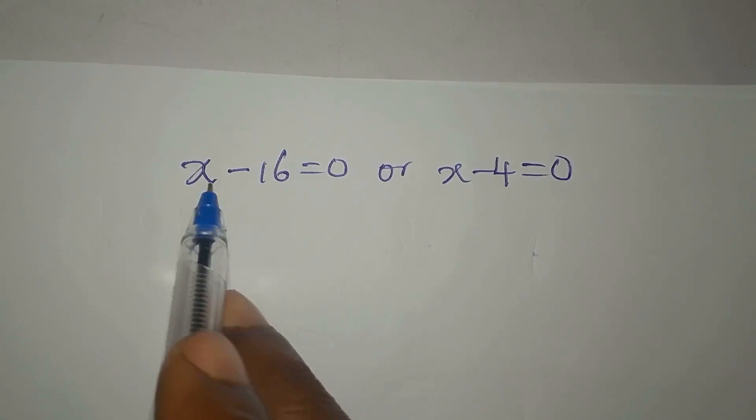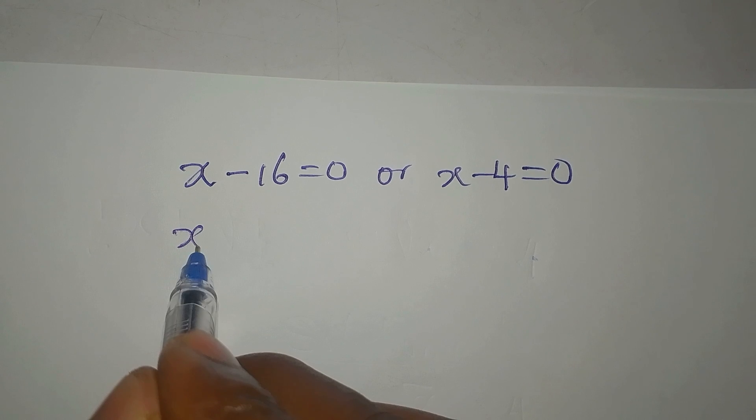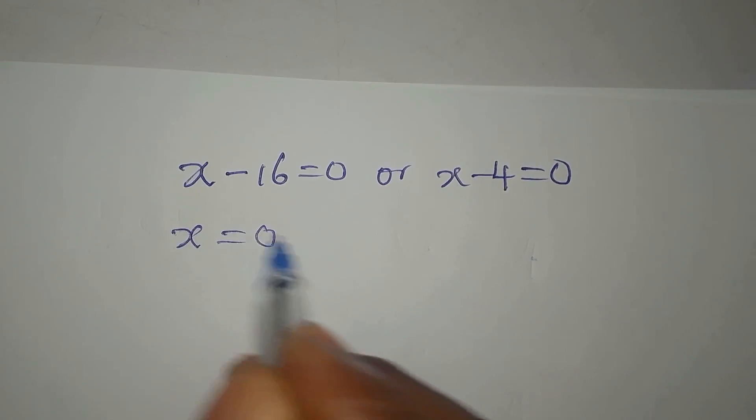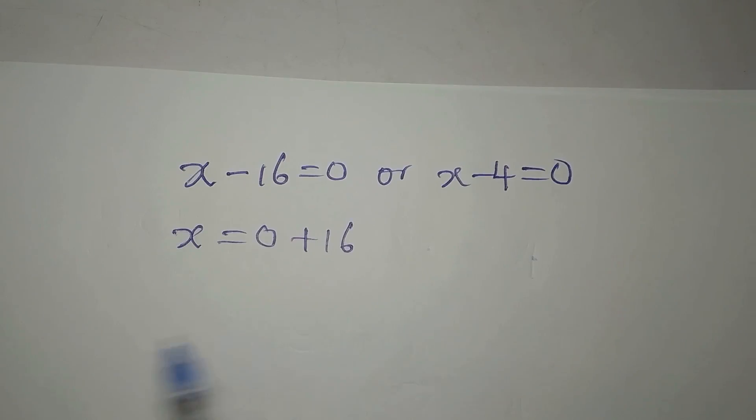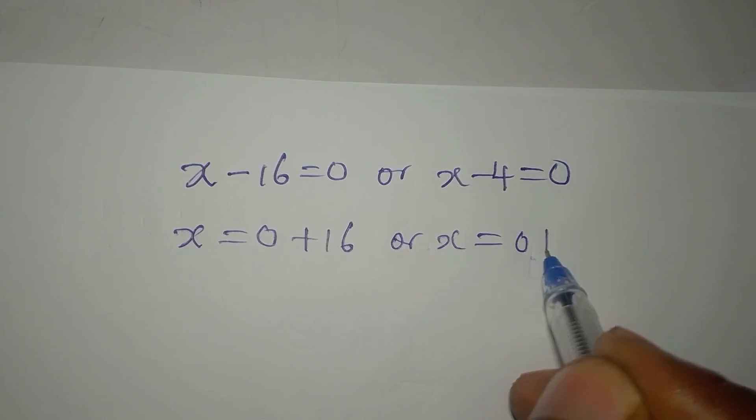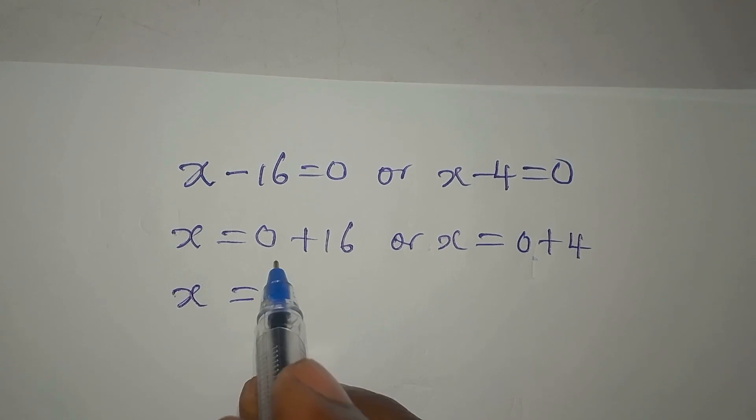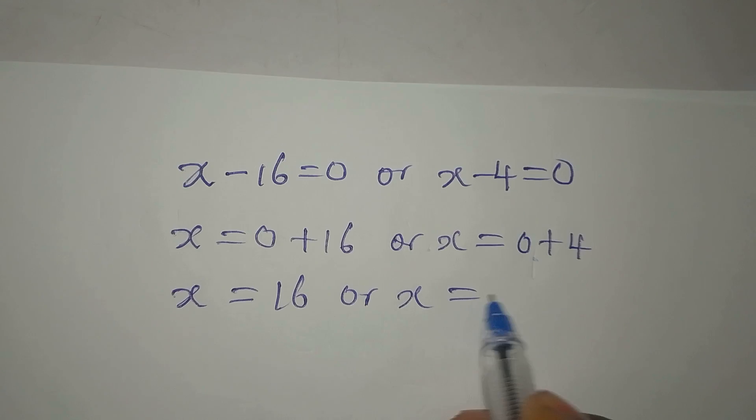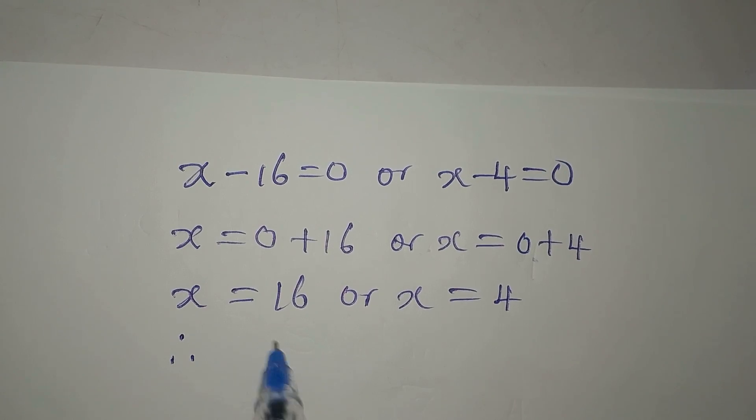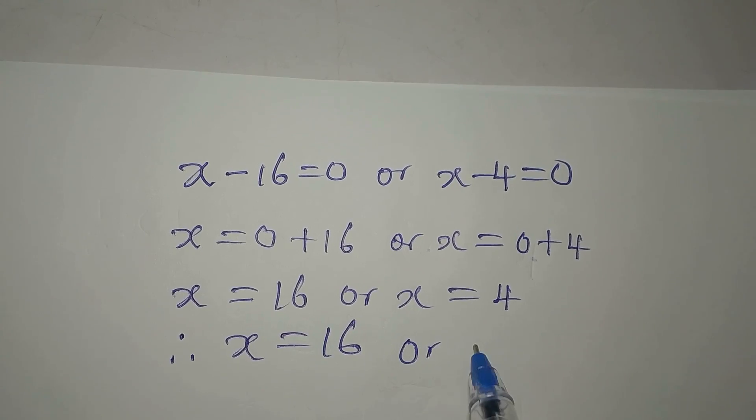If we make x the subject from here, it's either x is equal to 0 plus 16 if we collect terms, or x is equal to 0 plus 4. So our x from here is going to be 16, or x from here is 0 plus 4 and that is 4. Therefore, our x equals 16 or 4.